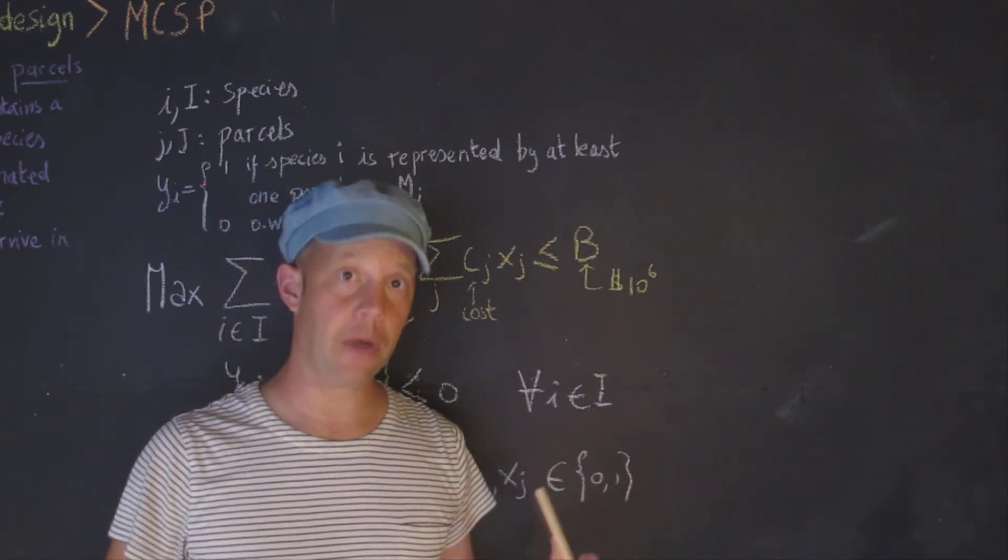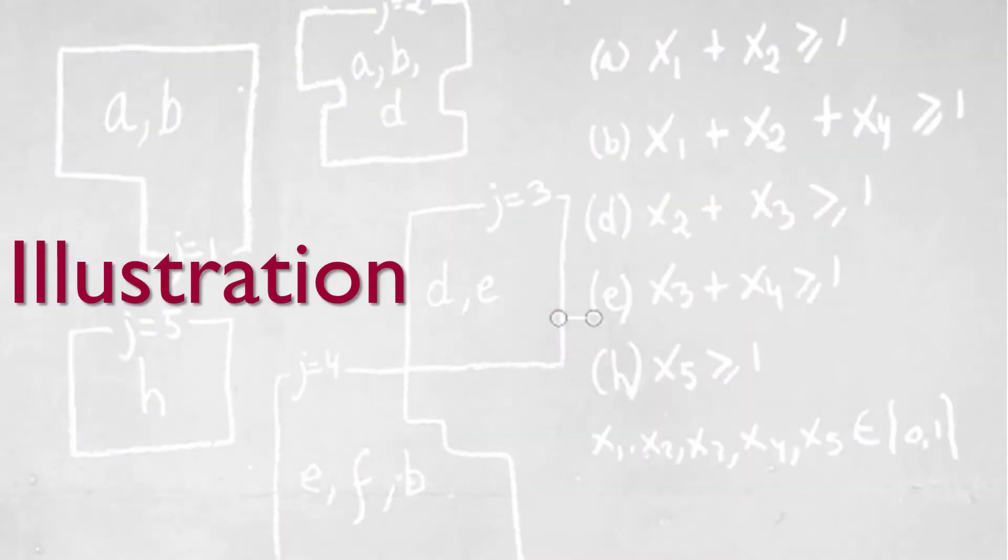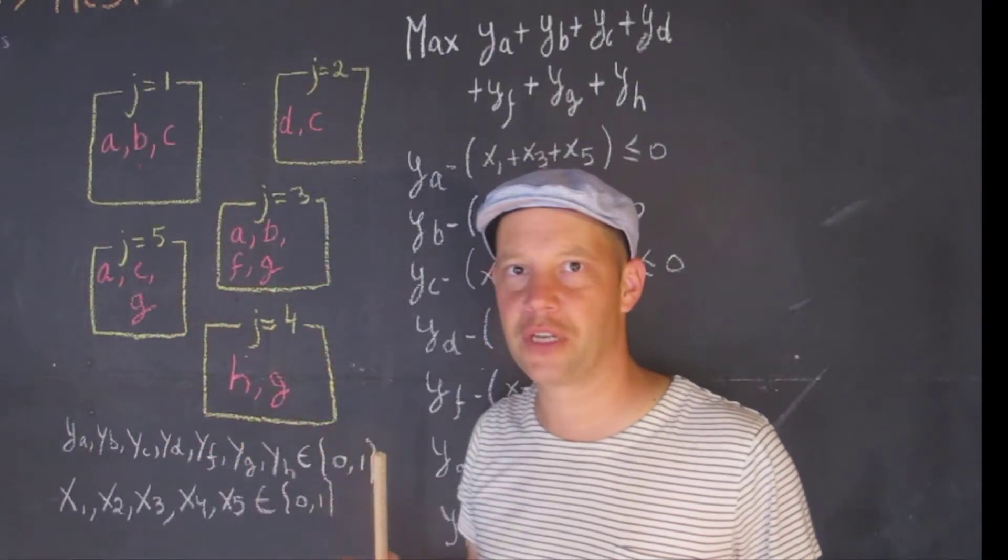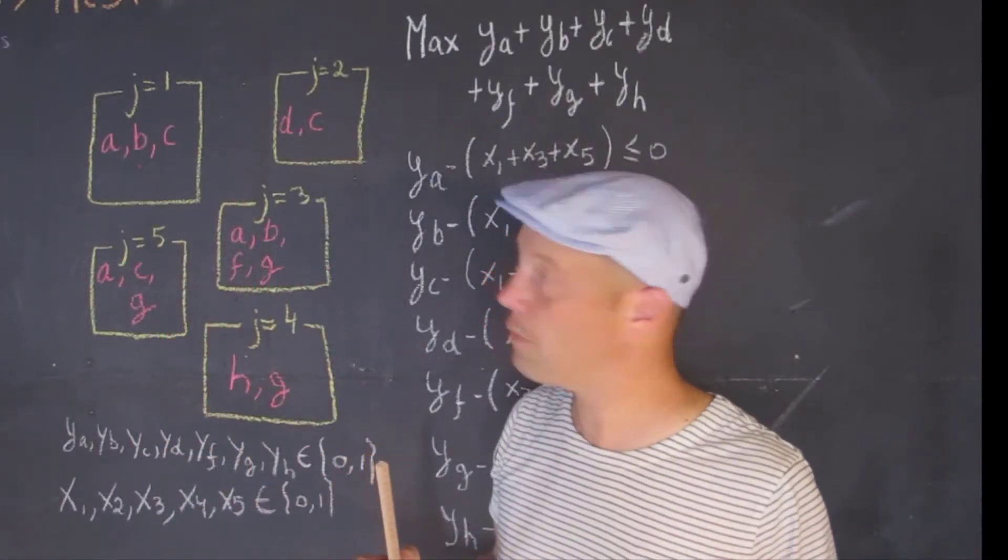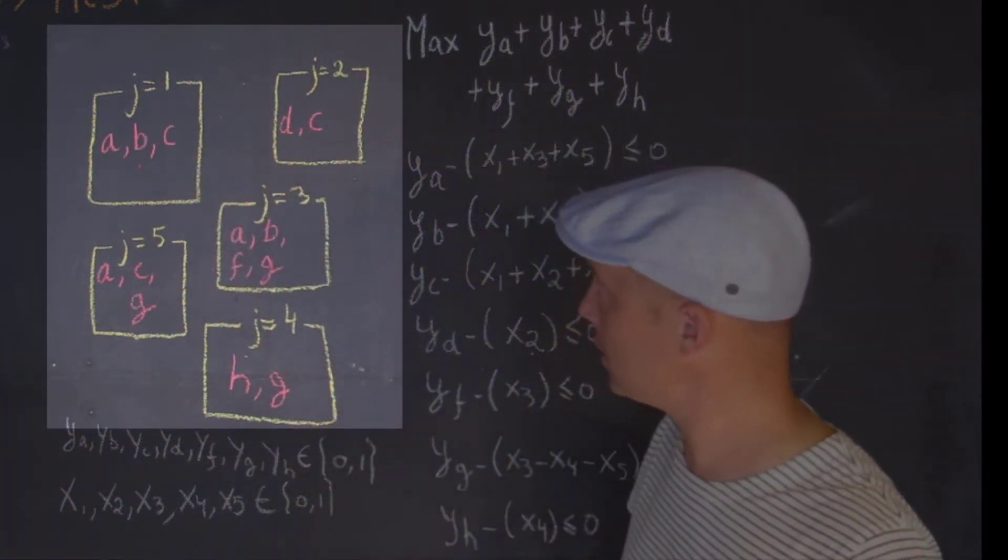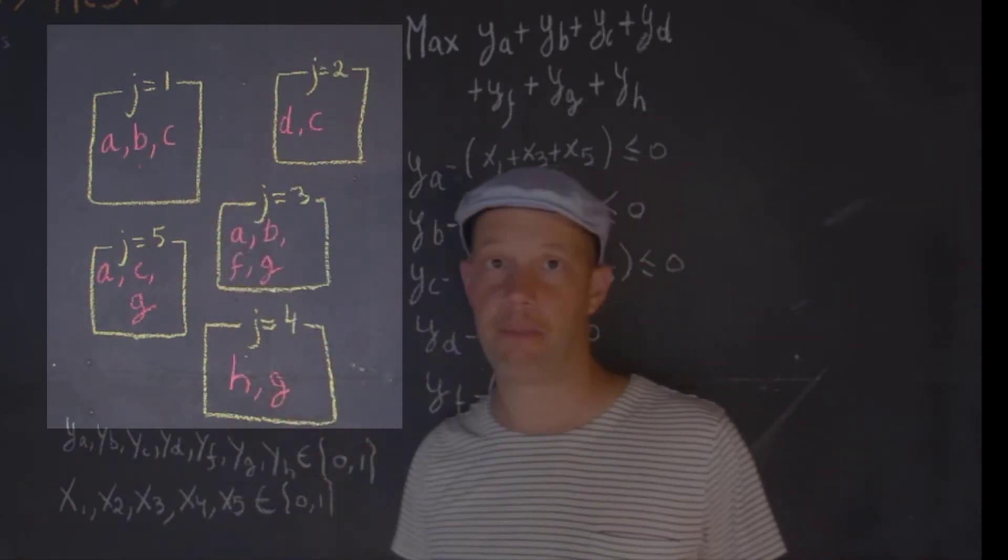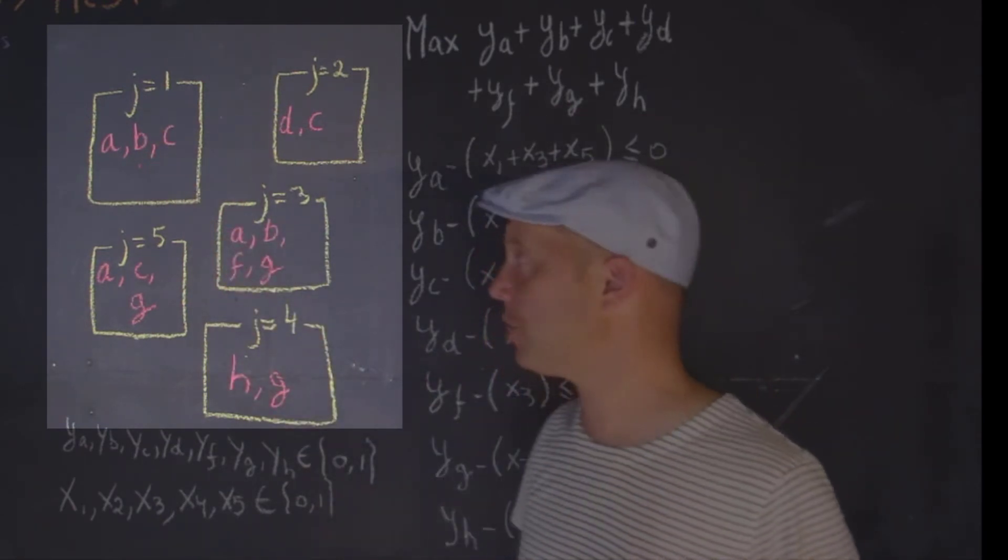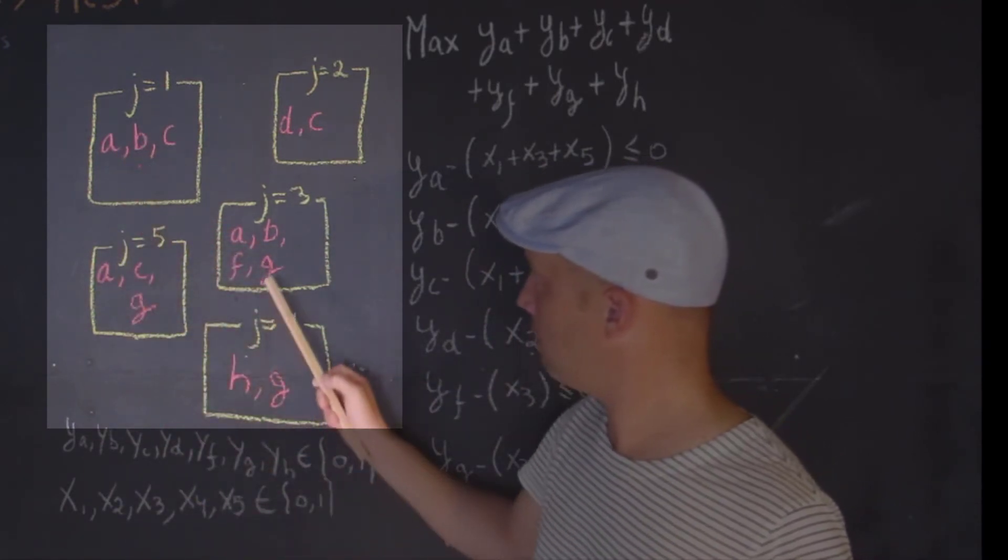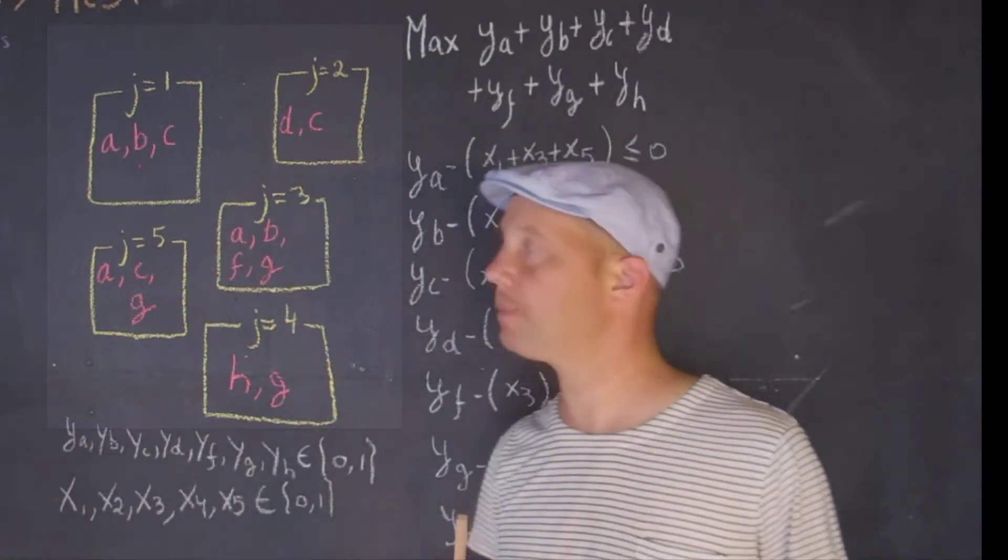So now I'm going to show a small example, and then we will solve it within CPLEX. As promised, we have an illustration of the maximum covering species problem. We have five different parcels, one through five. And for each of these parcels, we have a certain amount of species that have been observed. A, B, C, D, F, J, and H are the ones that have been observed.